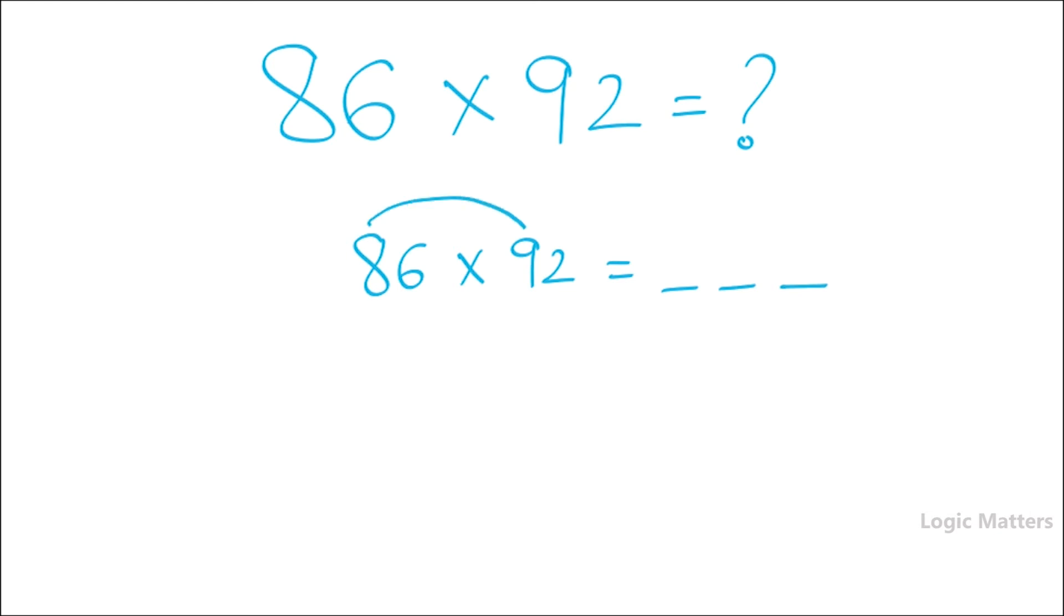So 8 multiplied by 9, that gives an answer of 72. And then 6 multiplied by 2 will give you an answer of 12. But we cannot write 12 here.